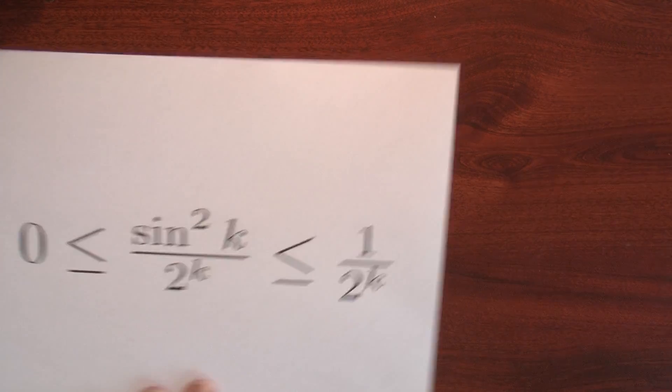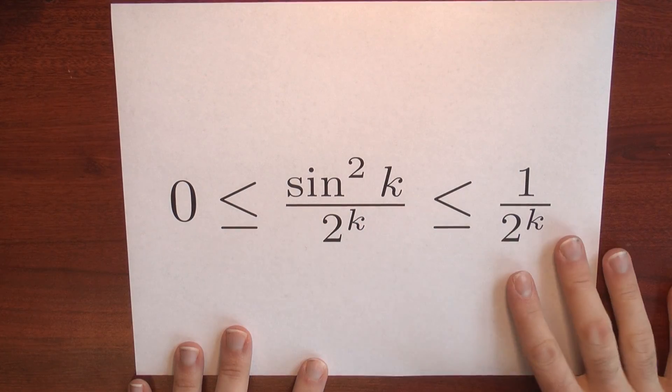Not only that, the sequence of partial sums S sub n is also bounded. Why bounded? It again boils down to this inequality.